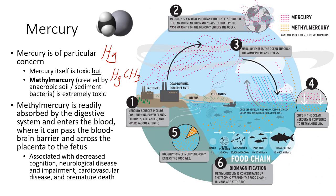Mercury gets into the atmosphere or waterways primarily via industry or coal-burning power plants, since coal has associated mercury. It can also be discharged naturally from weathering or volcanoes, but at very low concentrations compared to human activity. Once in the atmosphere, it can cycle globally, entering waterways by flowing down rivers or precipitating into the ocean. Anaerobic bacteria in the soil or water convert mercury to methylmercury. Roughly 10% of that methylmercury enters the food web, where it starts to biomagnify — increasing in concentration as you go up the food chain.